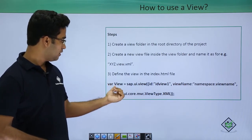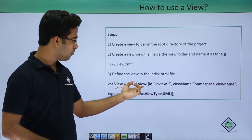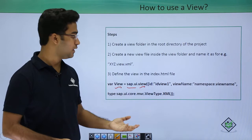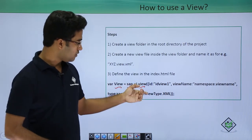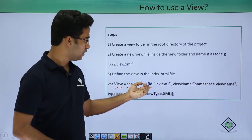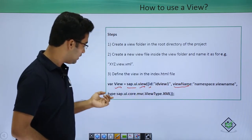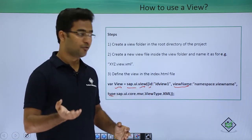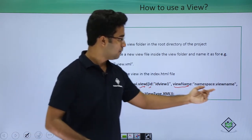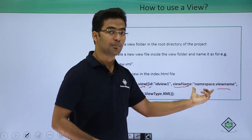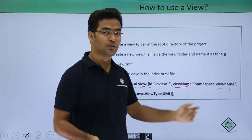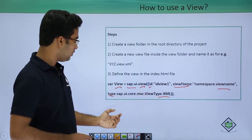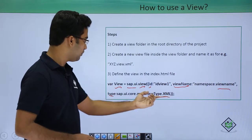I have created a variable named view. The view is the control here which is followed by the namespace sap.ui, and in the brackets we could see the properties: one is the id, another is the view name, and then the type. In the id I have given the string 'id view 1', and in the view name I have given the view name followed by the namespace, which we describe in the index.html file itself. Here the type is XML view — this whole is a predefined function. If we are using a JS view we just use JS.